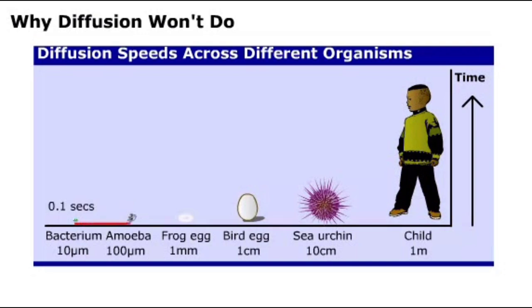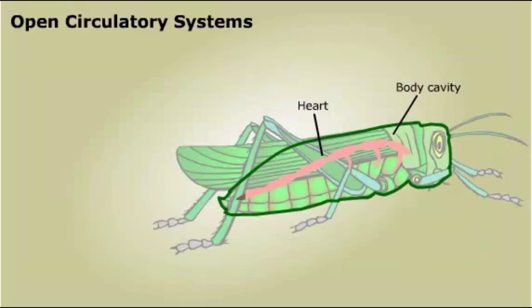Calculations show that the movement of a small molecule across a large cell can take as long as 10 seconds. To diffuse the same molecule a distance of one meter, or the height of a child, would take 32 years. The rule of thumb is, if you can see an animal with the naked eye, it won't rely on diffusion, and it'll have a more complex circulatory system.